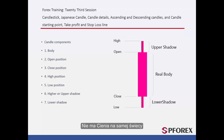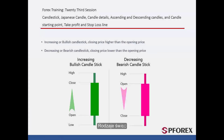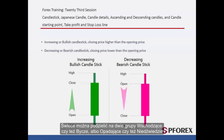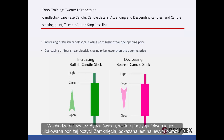There would be no shadow on a candle in some cases. Candlesticks can be categorized into two types: increasing or bullish, and decreasing or bearish. In increasing or bullish candlesticks, the open position is located below the closed position, as illustrated in the left figure.